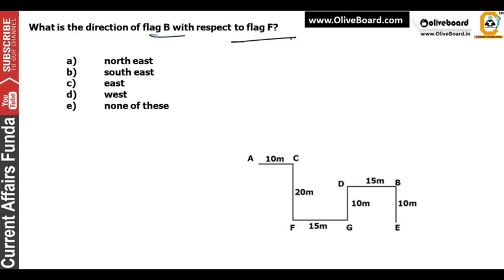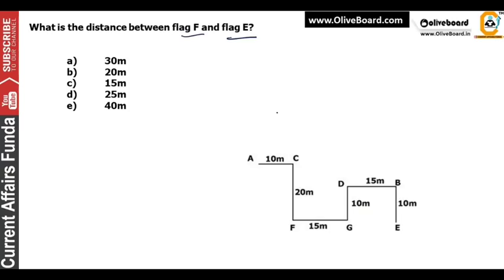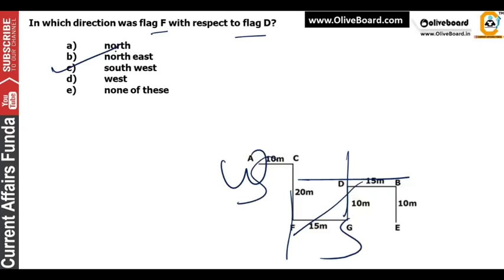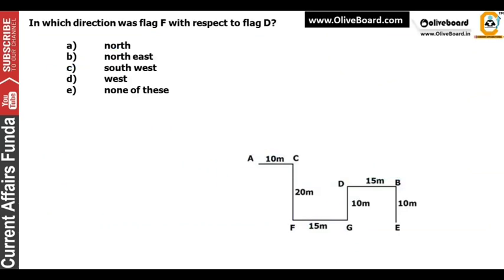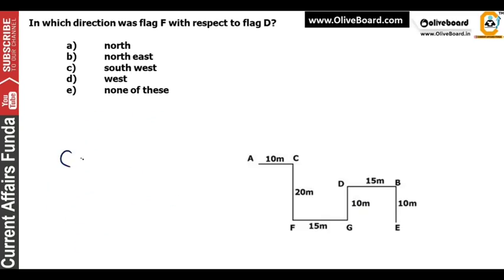Here we find the position of B with respect to F. B is north and east of F — so north-east, option number A is the correct answer. What is the distance between flag F and flag E? Between 15 and 15 — total is 30, so that will be the right answer. In which direction was flag F with respect to flag B? F is south and west of B — so south-west, option number C. Here you can find the shortest distance from C to G and from C to B — tell us about it in the comment section.